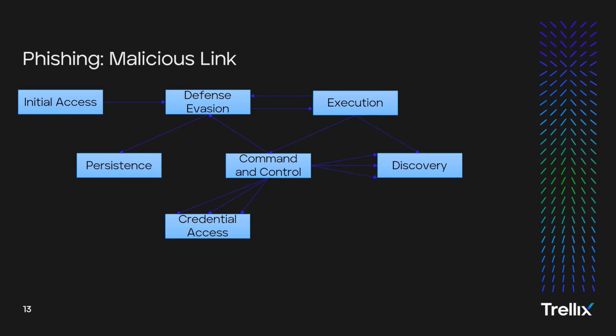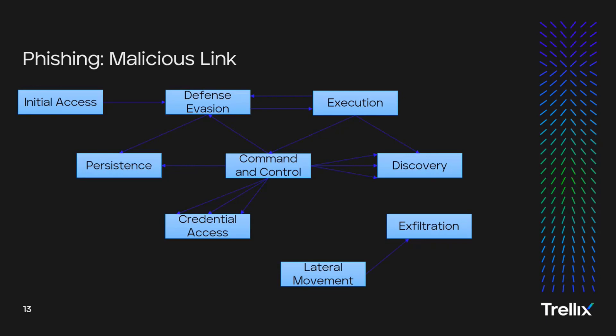The threat actor used multiple system utilities for discovery, utilizing system network configuration discovery. Next, the threat actor used PowerShell and CMD to install AnyDesk for persistence, with MITRE techniques application layer protocol web protocol, command and scripting interpreter PowerShell, remote access software, and Windows command shell. For lateral movement, the threat actor used RDP to install FileZilla for exfiltration. The threat actor used Task Manager to dump the LSASS process for credential access, utilizing remote services RDP and OS credential dumping.